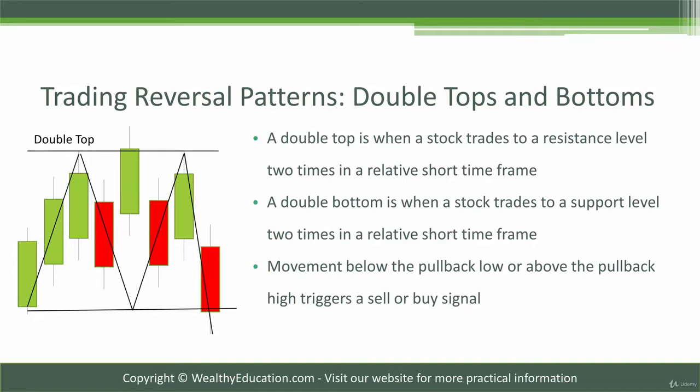we have the stock in an uptrend. It moves up to a resistance level, has a pullback to a pullback low, moves up a second time to the resistance level, and then pulls back and dives lower than the first pullback low. So basically with a double top you have sort of an M pattern, and with a double bottom you're going to have a W pattern.